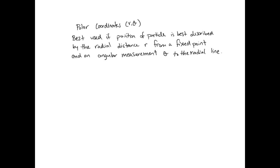Now we're going to look at polar coordinates. Polar coordinates are best used if the position is best described by the radial distance r from a fixed point and an angular measurement theta to the radial line. So let's say you have an origin and an xy coordinate system. Our particle is somewhere here, and the information we have is the radial distance r from the origin, and then the angle theta.